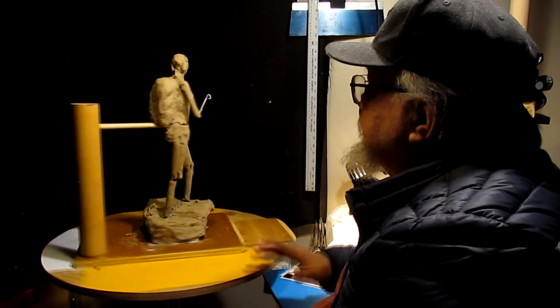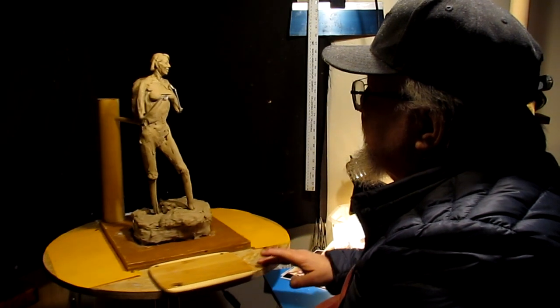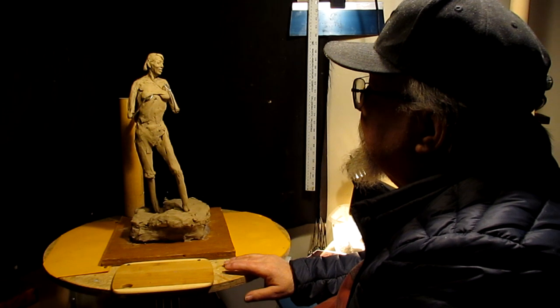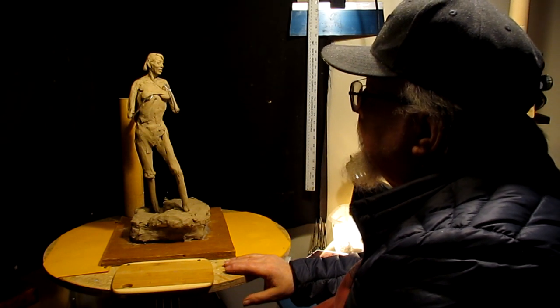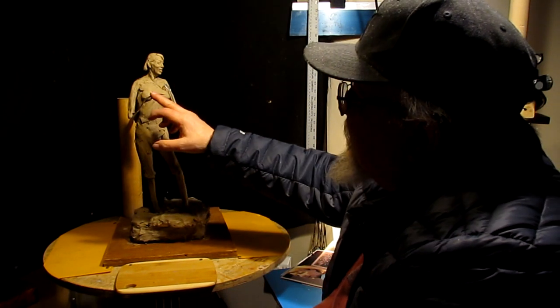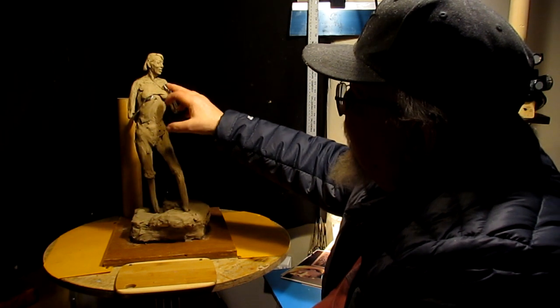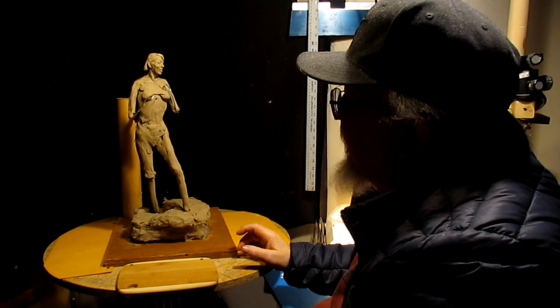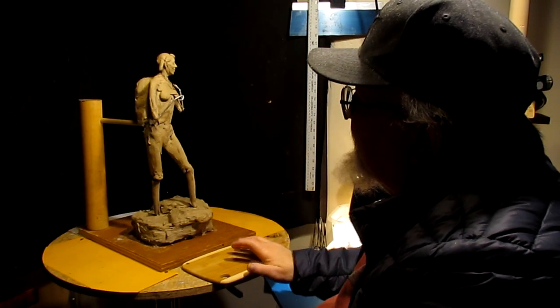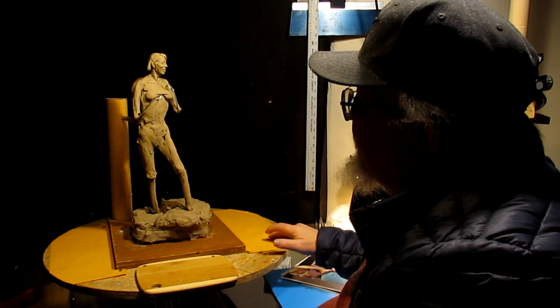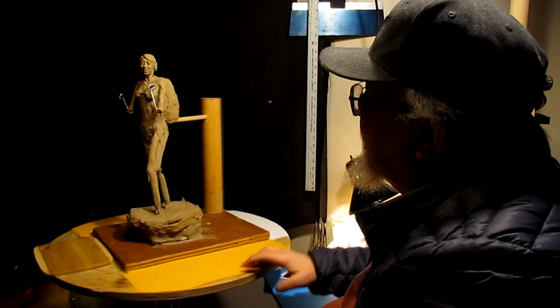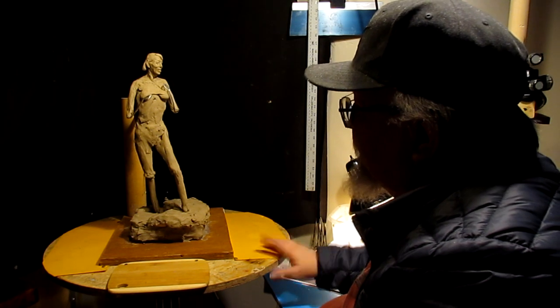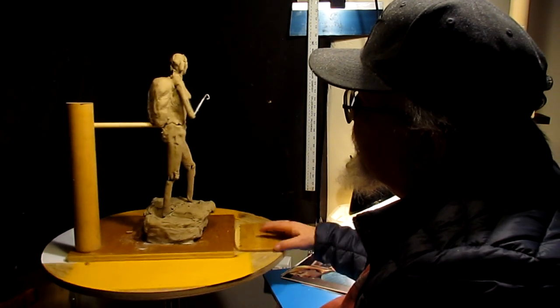Yeah, just changed her body position just a little bit because that was bothering me because she was too stiff. And I wanted to put a little more flow into her body. I'm going to have a camera, like I said before, in this hand, her thumb under the strap for the backpack here. I think it's going to turn out pretty good. I'll finish it up next week and move on to another project.